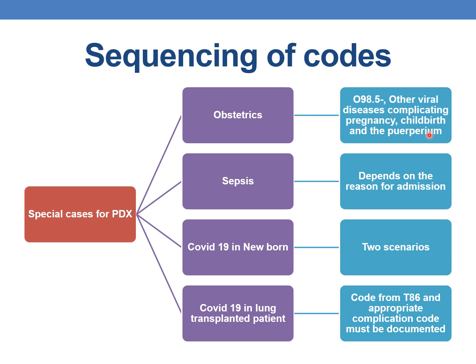Whenever a pregnant woman is diagnosed with COVID-19, the O98.5 series code must be given first, followed by U07.1. In the case of sepsis, which code is assigned as PDX — COVID-19 or sepsis — depends upon the reason for admission. If the reason for admission is COVID-19 infection and the person develops sepsis after admission, the PDX must be COVID-19 only. Whenever COVID-19 infection occurs in a lung transplant patient, a code from the T86 series and an appropriate complication code must be documented before the COVID-19 infection code.